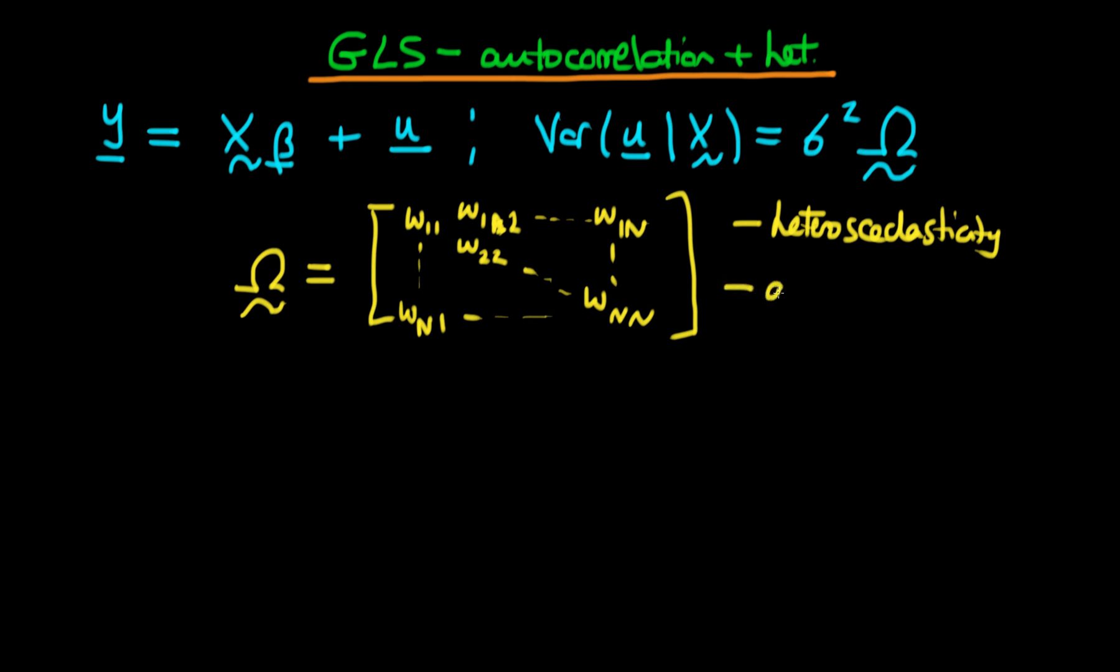We also have autocorrelation amongst errors because we've got off-diagonal components. For example, this first off-diagonal component, omega 1-2, represents the covariance between u1 and u2.